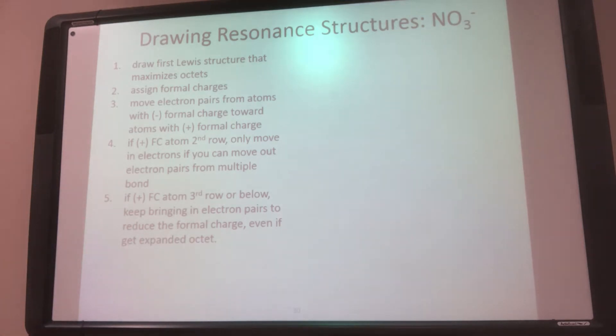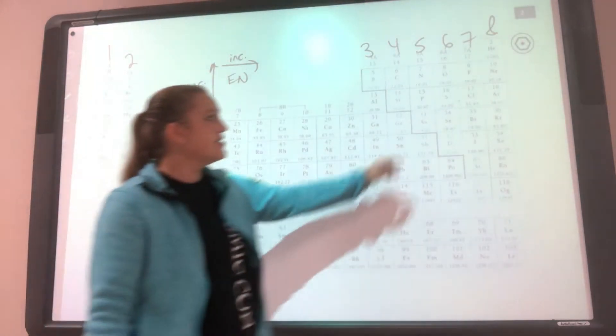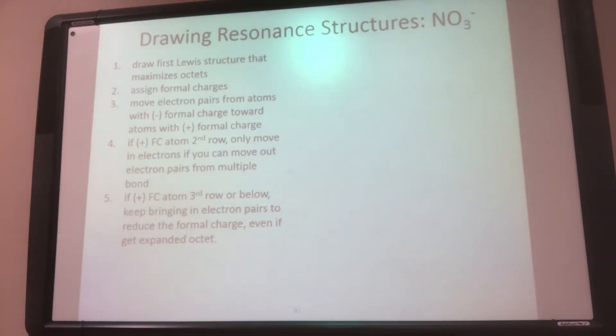All right, so I have NO3 minus. The first thing is to figure out who goes in the middle. So I've got N and O. N is less electronegative, so N goes in the middle. So N, O, O, O.